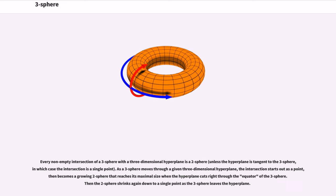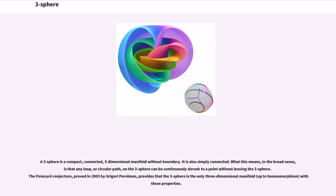The three-dimensional cubic hyperarea of a three-sphere of radius is, while the four-dimensional quartic hypervolume is. Every non-empty intersection of a three-sphere with a three-dimensional hyperplane is a two-sphere. As a three-sphere moves through a given three-dimensional hyperplane, the intersection starts out as a point, then becomes a growing two-sphere that reaches its maximal size when the hyperplane cuts right through the equator of the three-sphere.